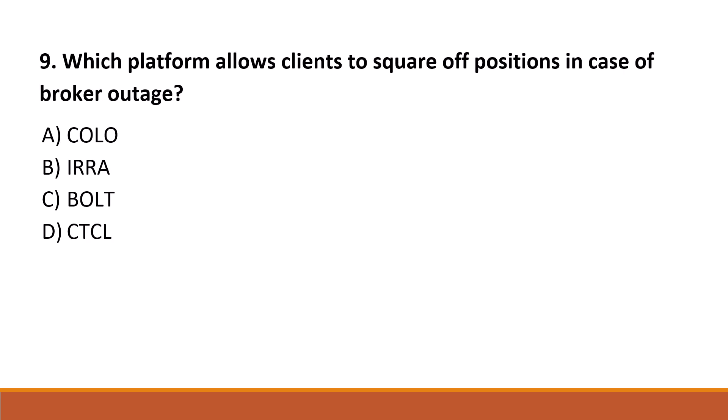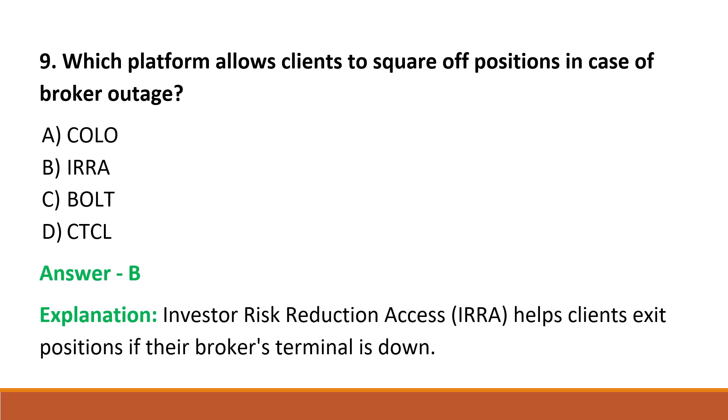Next question: which platform allows clients to square up positions in case of broker outage? Option A: COLO. Option B: IRRA. Option C: BOLT. Option D: CTCL. The correct answer is Option B, IRRA. Investor Risk Reduction Access helps clients exit positions if their broker's terminal is down.